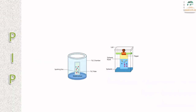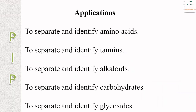This is a structural representation of partition chromatography. Applications of partition chromatography: it is used to separate and identify amino acids, tannins, alkaloids, carbohydrates, and glycosides.